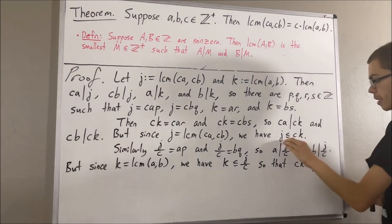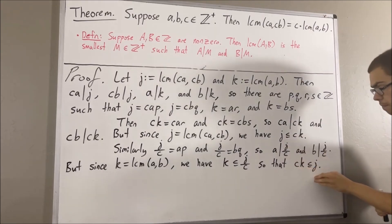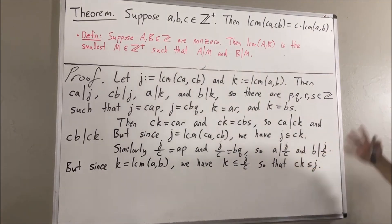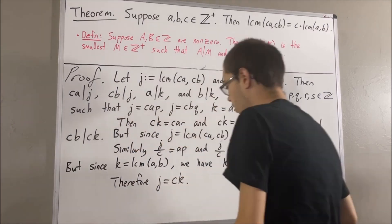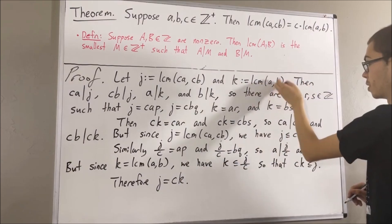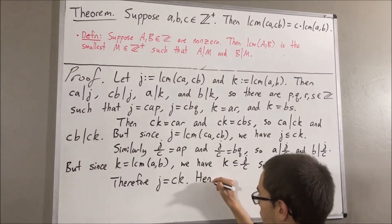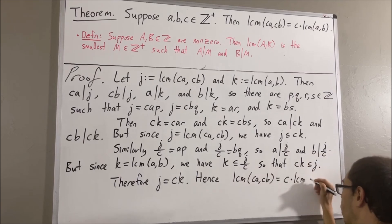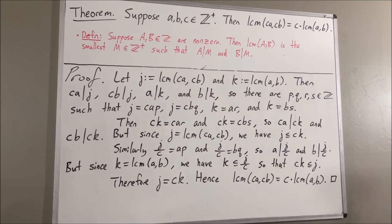So we have shown that j is less than or equal to ck and ck is less than or equal to j, which tells us that j must be equal to ck. Since j equals the LCM of ca and cb, and k equals the LCM of a and b, this means we have shown that LCM(ca, cb) equals c times LCM(a, b). This completes the proof.